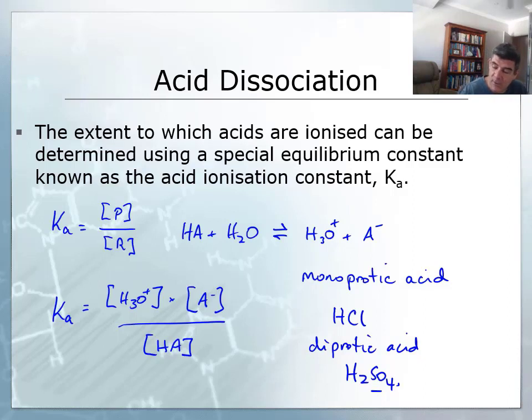What we notice very quickly is that as we analyze this particular equation, we know that a strong acid is going to have a high degree of ionization, and therefore the product concentrations will be high and the concentration of the acid molecules will be low.